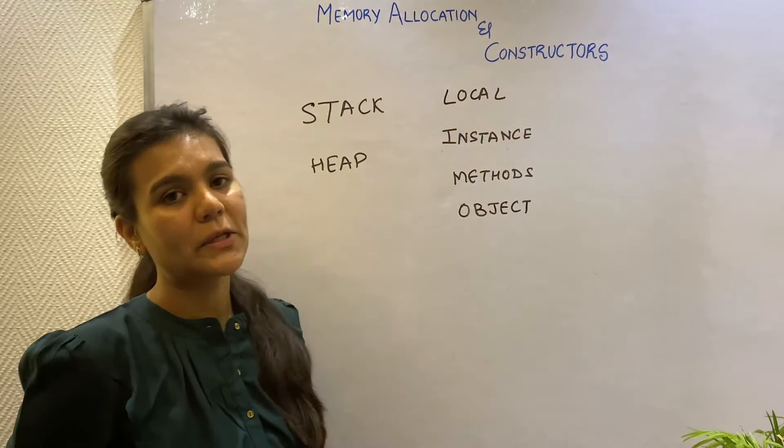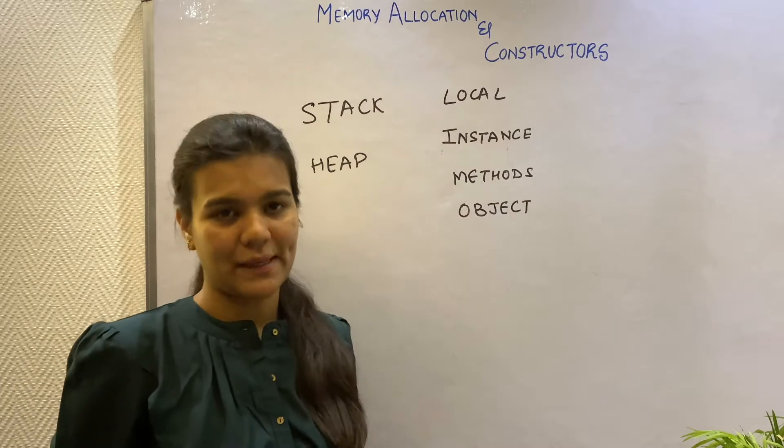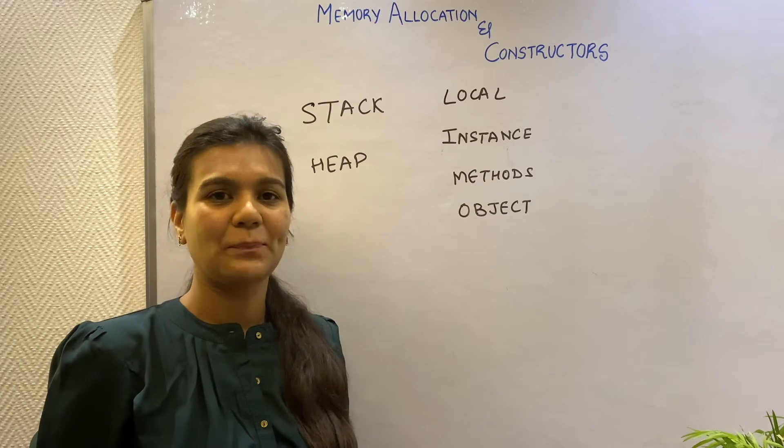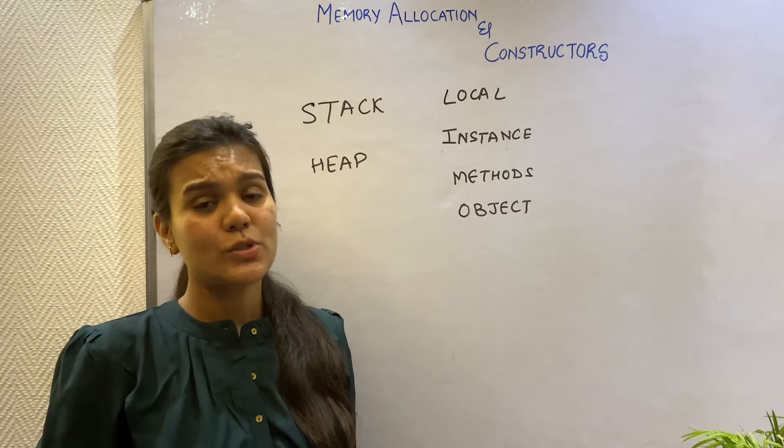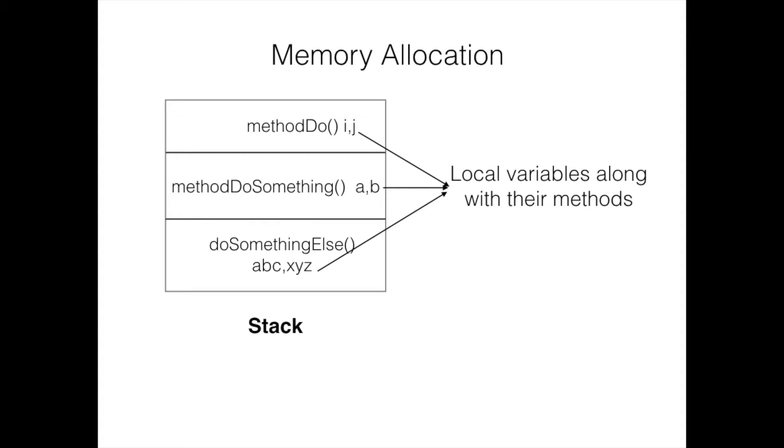Local variables are the variables that are declared inside a method and they live on the stack. They are temporary and they live on the stack as long as the method is executing. So any currently executing method, along with its local variables, lives on the stack until it's done.